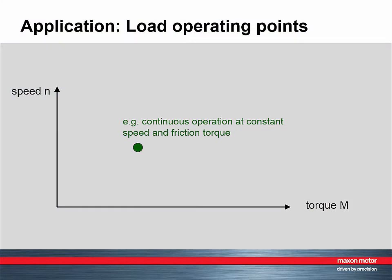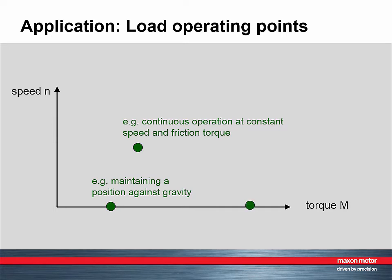The starting point for gearhead selection is the motion of the load in the application. The necessary operation cycles, speed profiles, and friction result in speed and torque requirements the drive has to fulfill. In our standard diagram with motor speed as a function of torque, this can be represented as points of operation — for example, constant operation at a given torque and speed, maintaining a position against some external force at zero speed, or speeding up a mass inertia, which is usually where the highest torques occur.